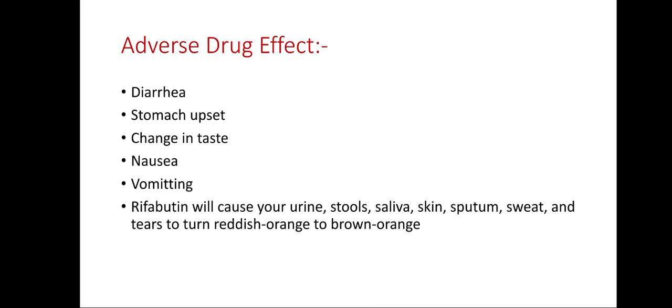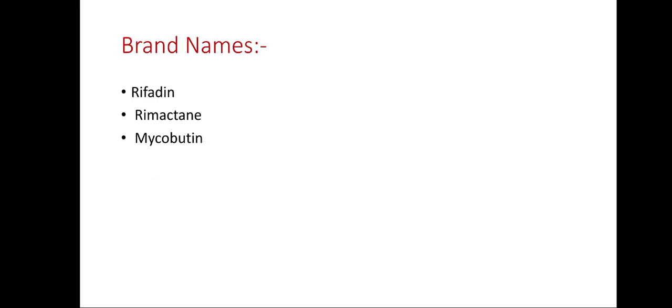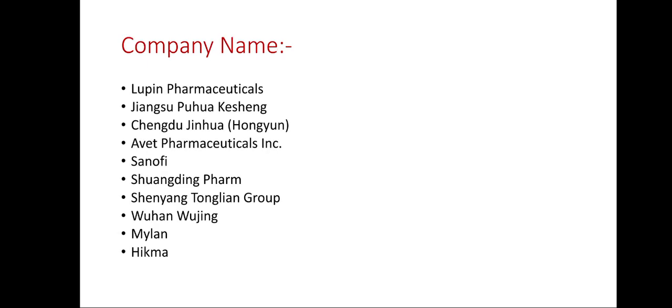Adverse drug effects include diarrhea, stomach upset, change in taste, nausea, and vomiting. Rifabutin will also cause your urine, stool, saliva, skin, sputum, sweat, and tears to turn reddish-orange to brown-orange.